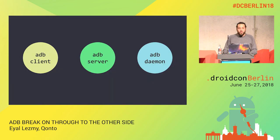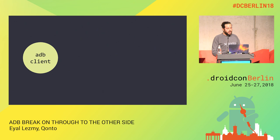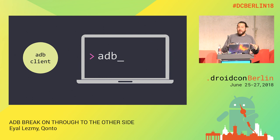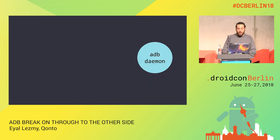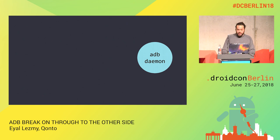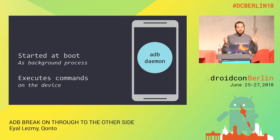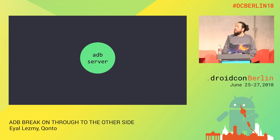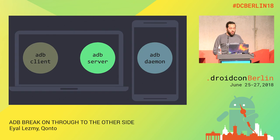How ADB works: you have three parts — the client, the server, and the daemon. The ADB client is the command line tool you use; when you type ADB something in your terminal, you are the ADB client. The ADB daemon runs on a device, started by the Android system as a background process, and its role is to execute your commands on the device. In the middle, you have the ADB server, which is the real bridge of the Android Debug Bridge — it links the client and the daemon.